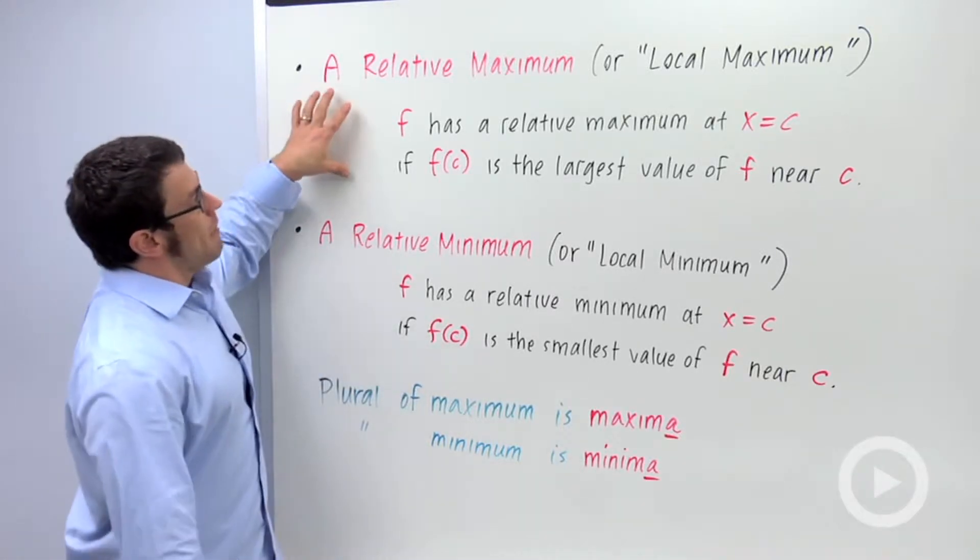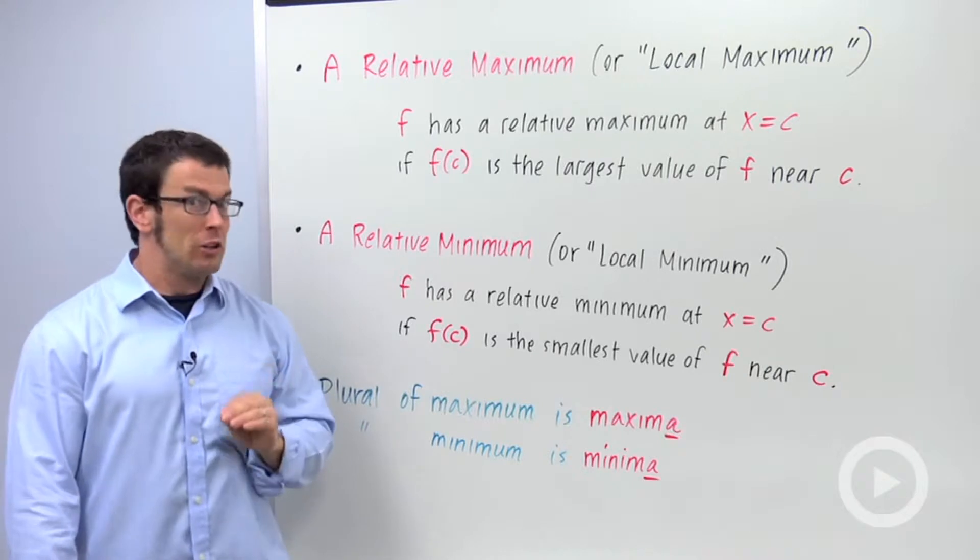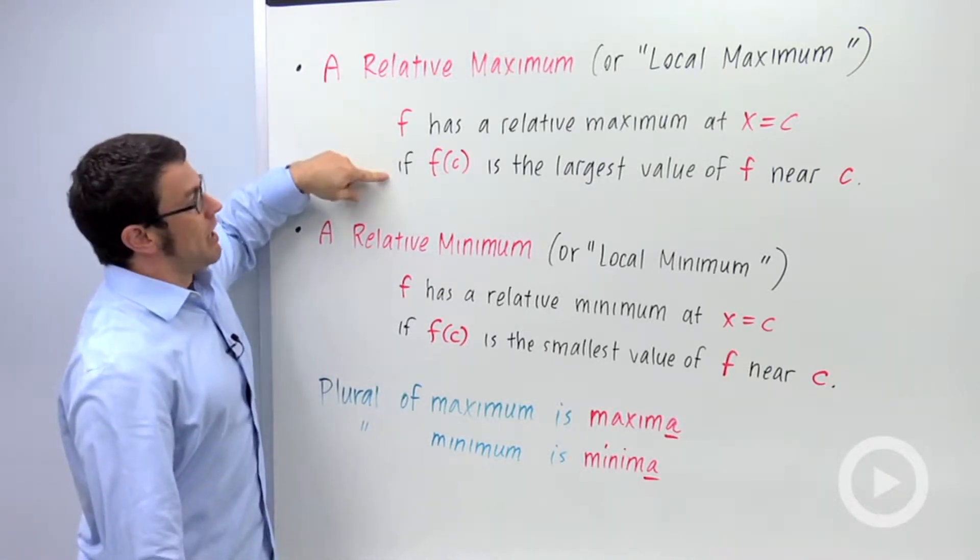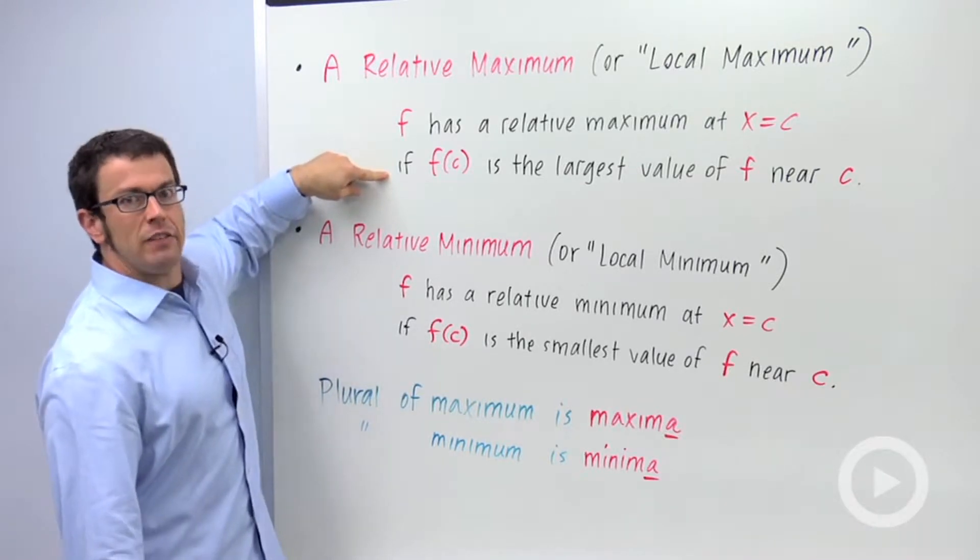Here are the definitions. A relative maximum, and it's sometimes called a local maximum. F has a relative maximum at x equals c if f of c is the largest value of f near c.